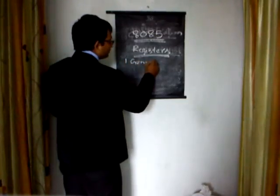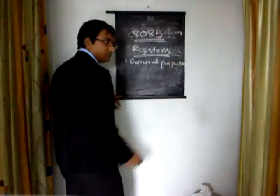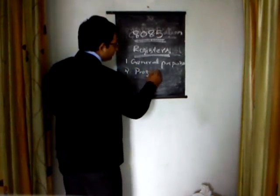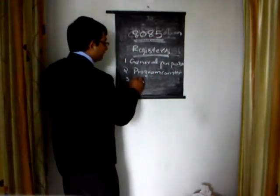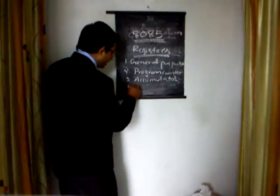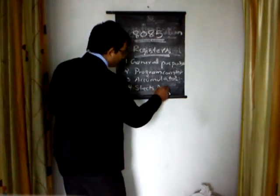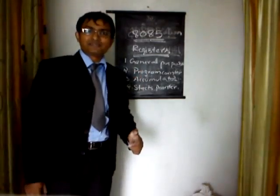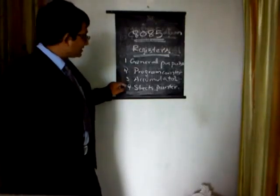So there are four types of registers present in 8085: the general purpose register, the program counter, the accumulator, and the stack pointer.